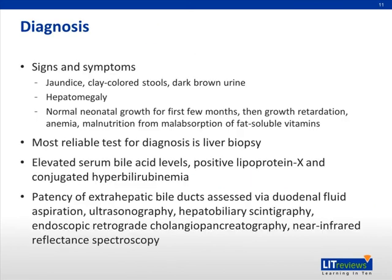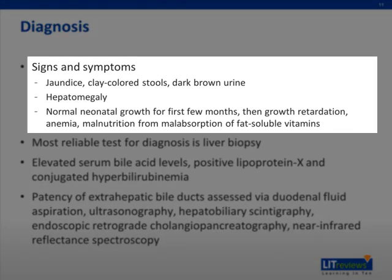I will now discuss the diagnosis of the disease. Signs and symptoms of biliary atresia include jaundice, clay-colored stools, dark brown urine, and hepatomegaly. Children with the disorder have normal growth for the first few months, then experience growth retardation, anemia, and malnutrition from malabsorption of fat-soluble vitamins.